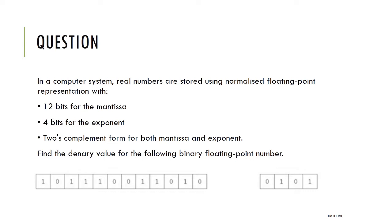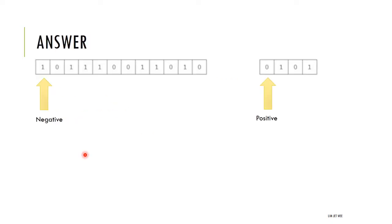I've copied the bit string for the mantissa as well as the exponent. The first thing I look at is the first bit to identify whether they are positive or negative numbers. Looking at the mantissa, the first bit is a one, so the mantissa is a negative number. Then looking at the exponent, the first bit is a zero, so the exponent is a positive number.